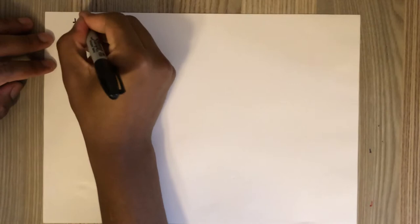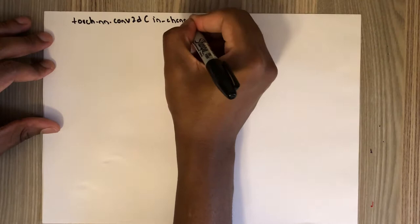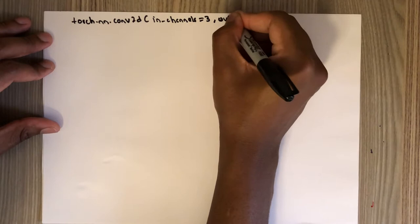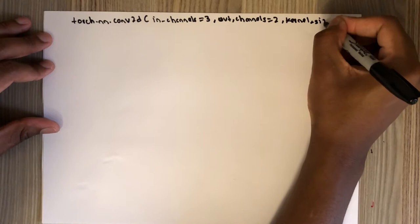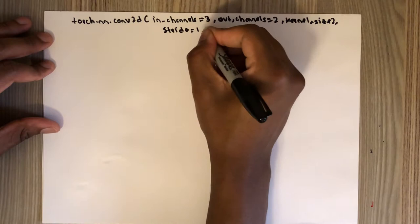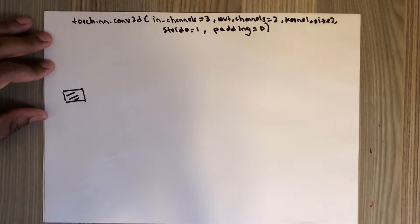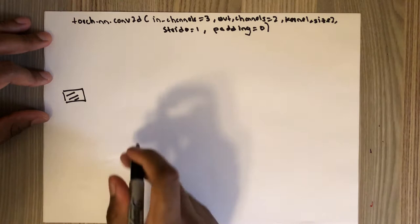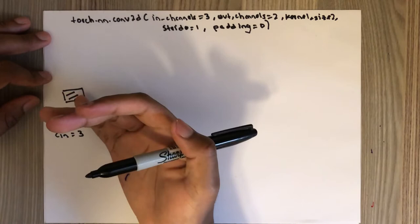Today I want to explain the torch.nn.Conv2d module. It has arguments: input channels — for this example it is 3 — output channels — for this example it is 2 — kernel size of 2, stride of 1, and padding of 0. I assume you know convolution. The c_in is 3, which means the input image has three channels.